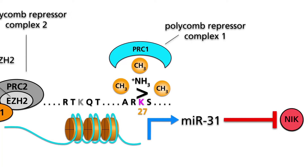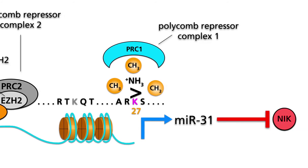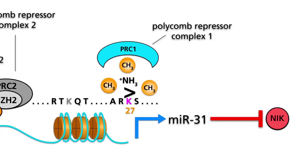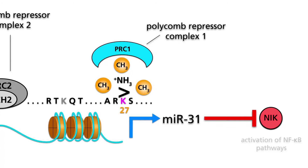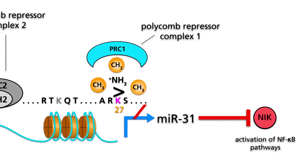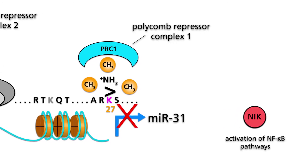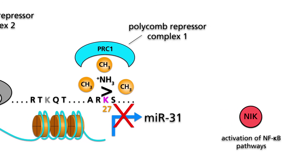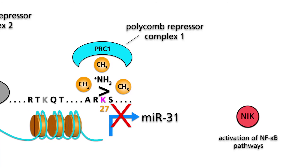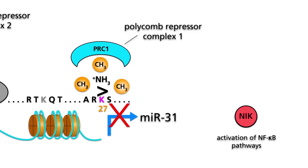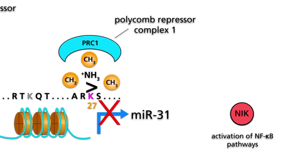As a consequence, the transcription of the MIR31 gene is repressed. The NIK gene is no longer silenced, and the NIK kinase can activate NF-κB pathways.